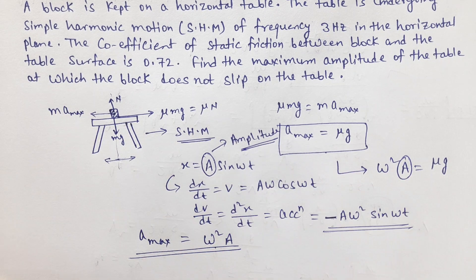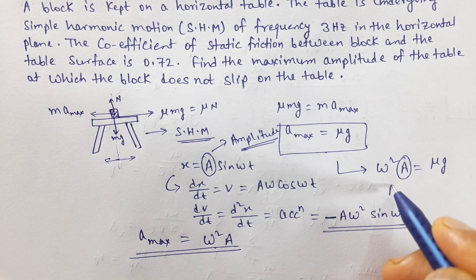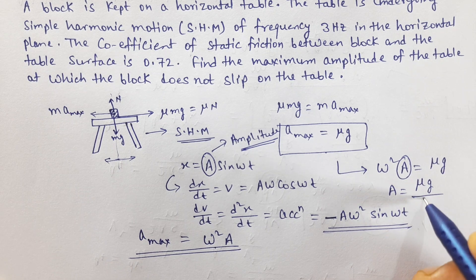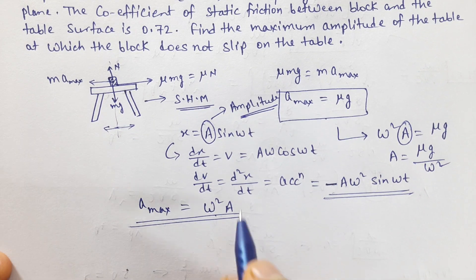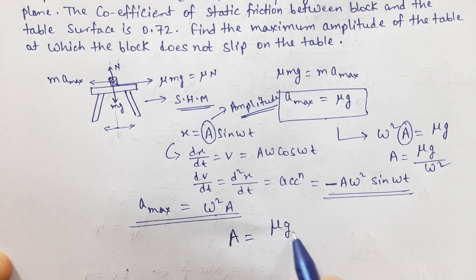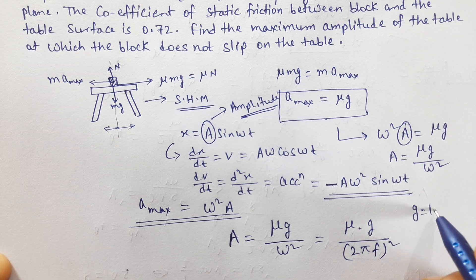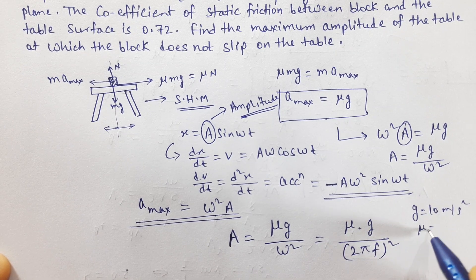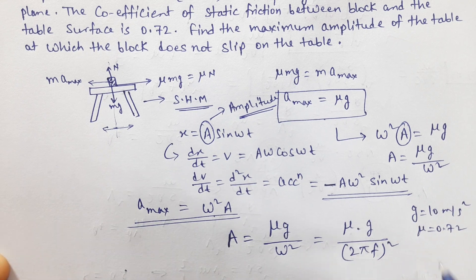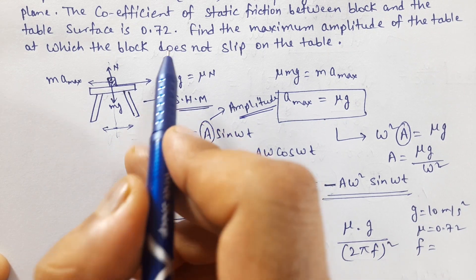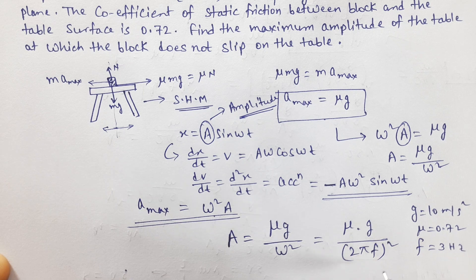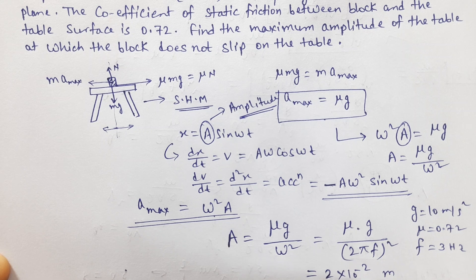So A_max = ω²A = μg, which gives amplitude A = μg/ω² = μg/(2πf)². Substituting μ = 0.72, g = 10 m/s², and f = 3 Hz, the maximum amplitude works out to 2 × 10⁻² meters.